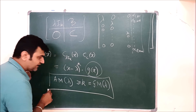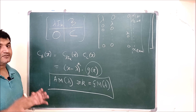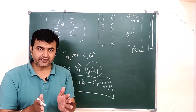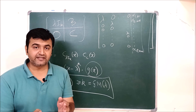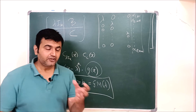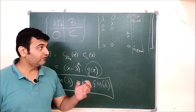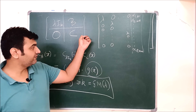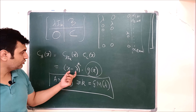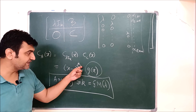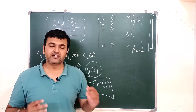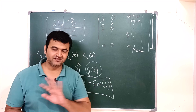Therefore algebraic multiplicity is always greater than or equal to geometric multiplicity. The proof is simple: take k linearly independent eigenvectors, extend them to a basis, form the matrix of T, observe the block upper triangular structure, and the characteristic polynomial has (x-λ)^k as a factor, so λ repeats at least k times. I hope the proof is clear. If you have any doubts, ask in the comment section. Thank you.